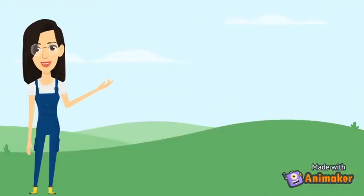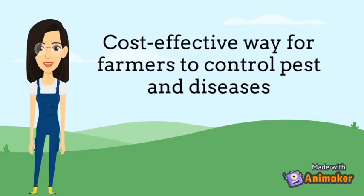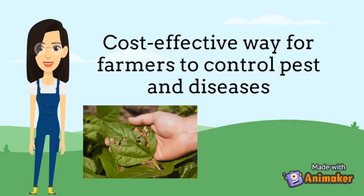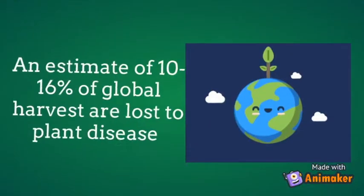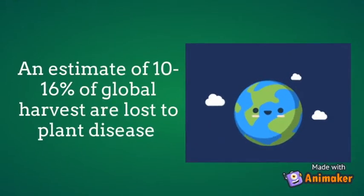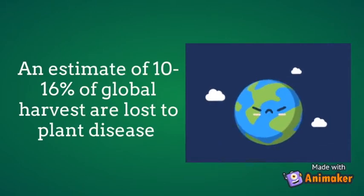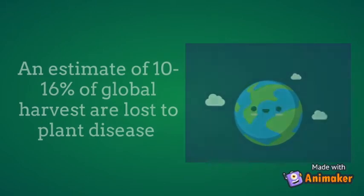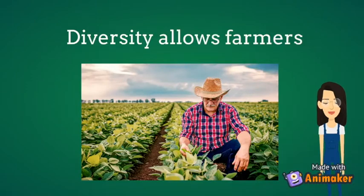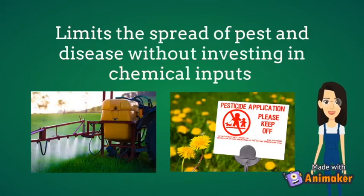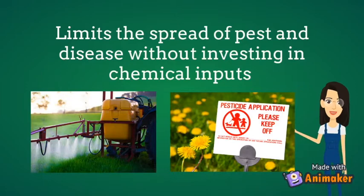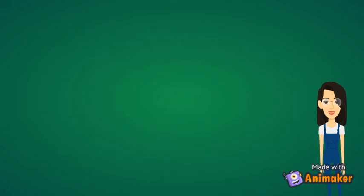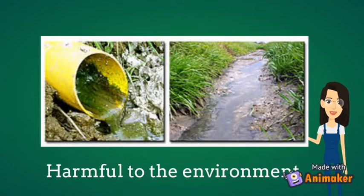Agricultural biodiversity is also a cost-effective way for farmers to control pests and disease. There is currently an estimate of 10-16% of global harvests lost due to plant diseases. Diversity allows farmers to limit the spread of pests and disease without investing in chemical inputs that could directly be harmful to the environment.